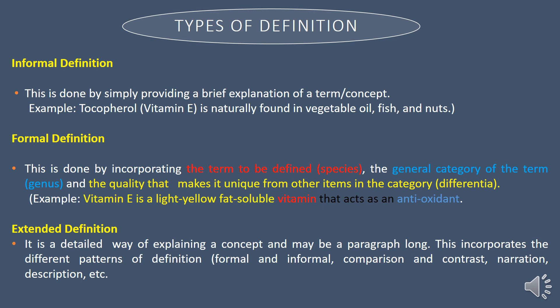For the formal definition, this is done by incorporating the term to be defined, the general category of the term, and the quality that makes it unique from the other items in the category. For example, vitamin E is a light yellow, fat-soluble vitamin that acts as an antioxidant. If you observe, it is color-coded: the term to be defined is vitamin E, the general category is antioxidant, and the quality that makes it unique is that it is a light yellow, fat-soluble vitamin.